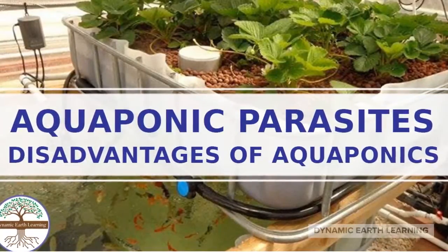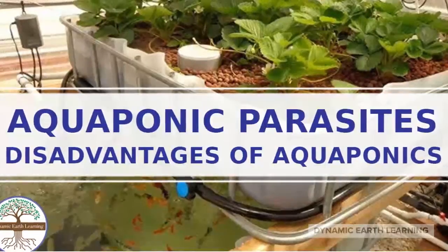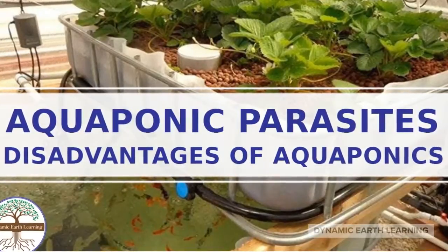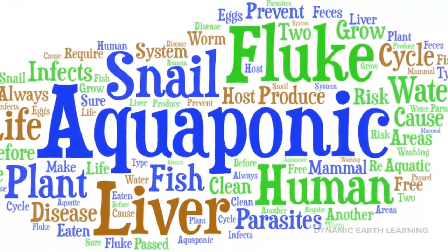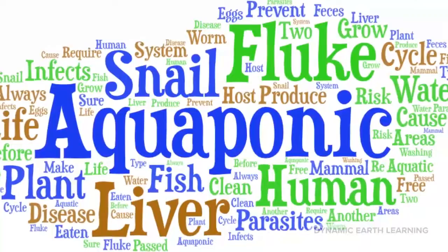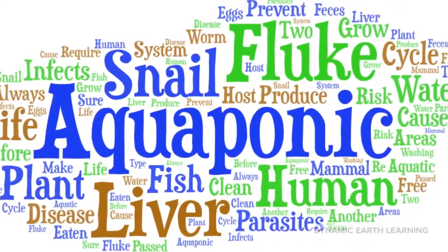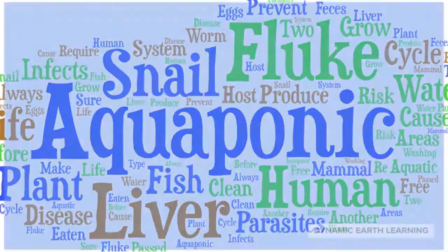Aquaponics in Human Disease: Parasites and Liver Flukes. Aquaponics refers to the relationship between water, aquatic organisms, bacteria, nutritional dynamics, and plants that grow together in water areas worldwide.